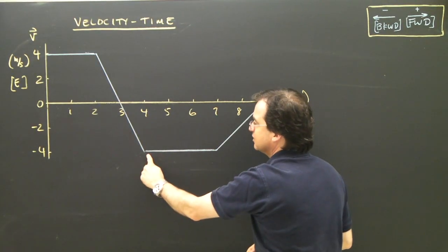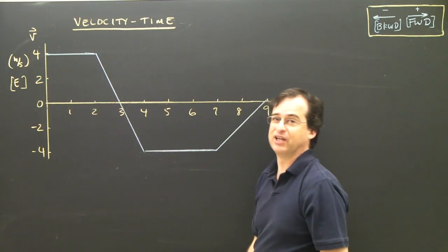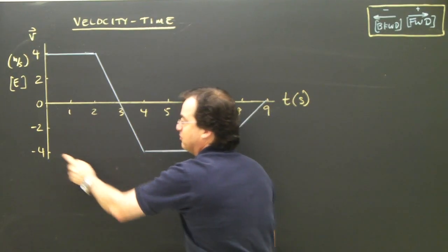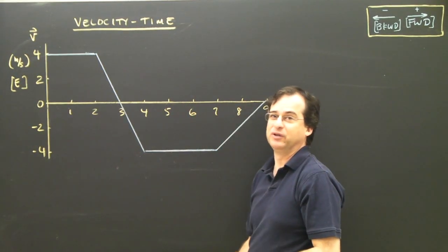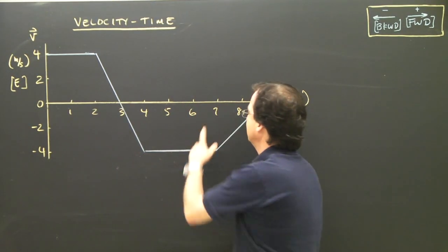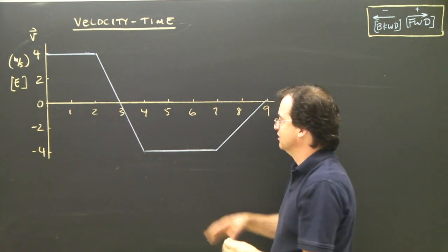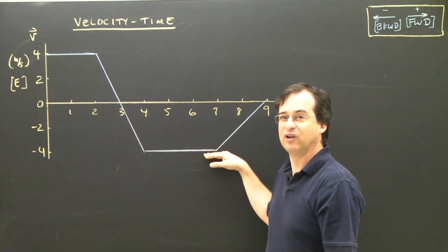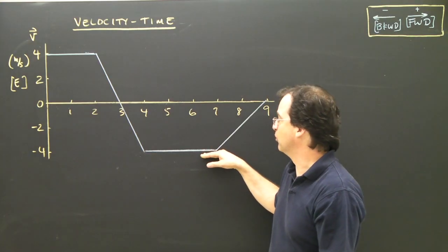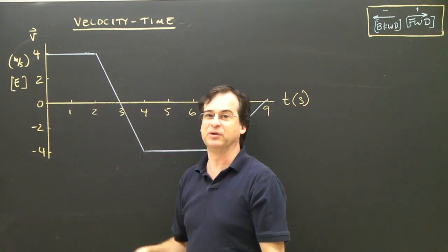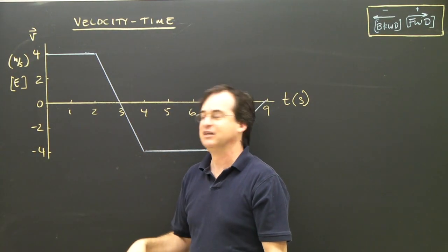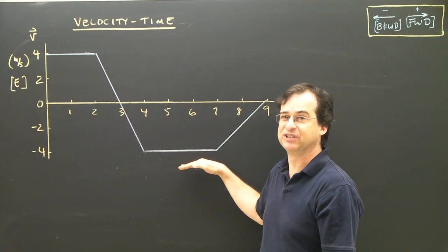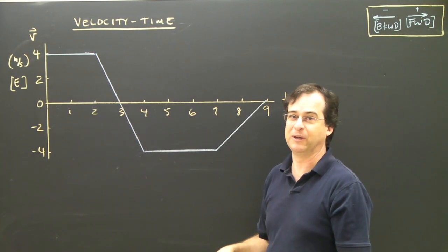At four seconds I'm running backwards at four meters per second, and at five seconds I'm still running backwards at four meters per second — all the way to seven seconds. So in this section I have constant velocity, uniform motion backwards at four meters per second. The slope here is zero, which agrees — the slope is acceleration, so I'm not speeding up or slowing down.